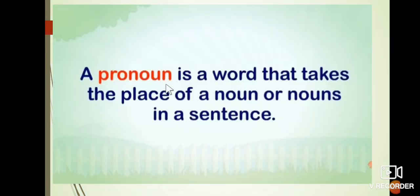So, a pronoun is a word that takes the place of a noun — a noun in a sentence. Pronoun ek word hota hai jo noun ka place leta hai. Noun kya hota hai? Naming word. Jitne bhi names aapke given hai, unko hum bolte hai noun. For example: Ram, Sham, Sita, Kundan, Sneha, Arham — yeh sab nouns hai.